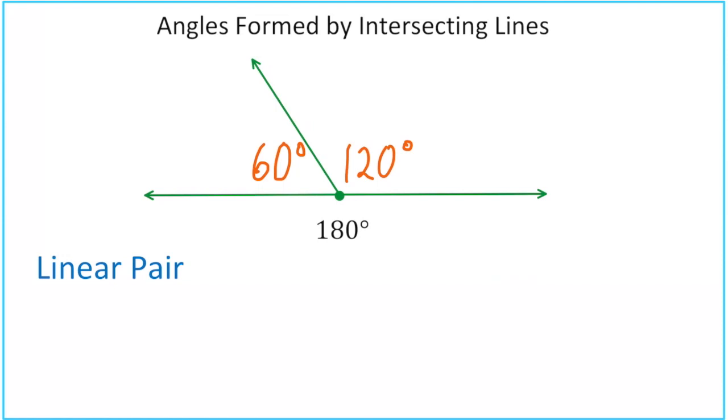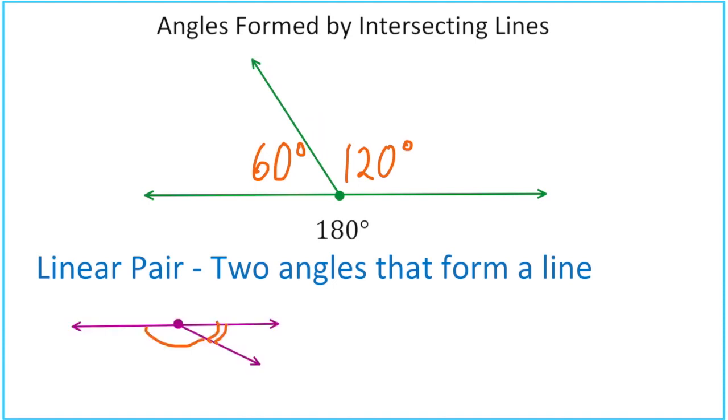A linear pair is two angles that form a line, and any time two angles form a line, they're going to add up to 180 degrees. Here's another example of a linear pair. And one more. So anytime you have two angles that form a line, you can call them a linear pair.